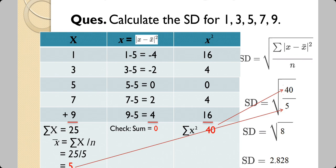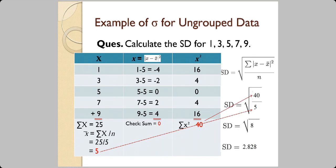Substituting: σ = √(40/5) = √8. Without the square root, this value is the variance; taking the square root gives the standard deviation. It is useful to either know the long-division method for square roots, use log tables (which are allowed in examinations), or memorize the square roots of prime numbers like 2, 5, and 7 to calculate other square roots.